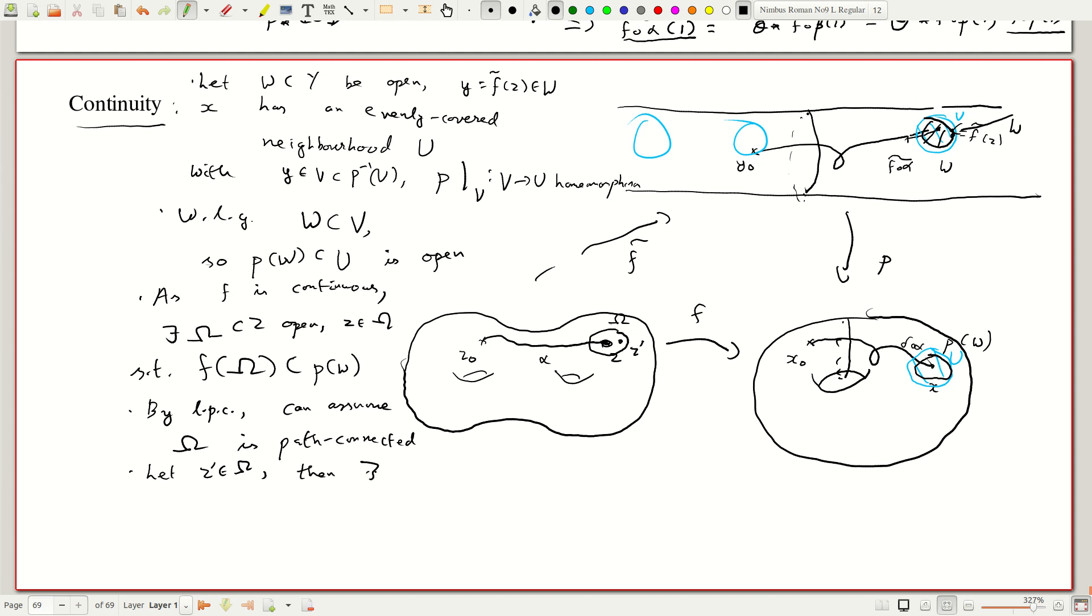Then there exists alpha prime contained in omega or let me be precise and say 0, 1 mapped to omega with alpha prime of 0 is z and alpha prime of 1 is z prime.